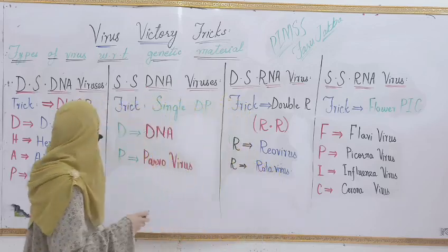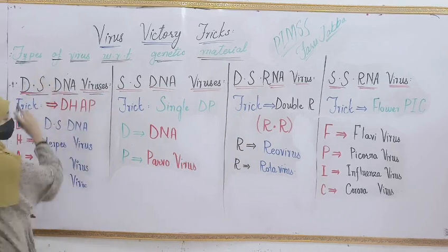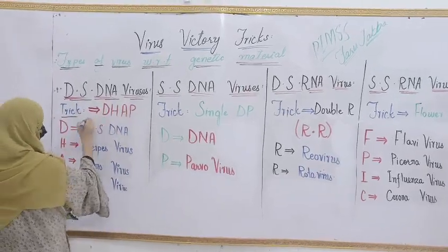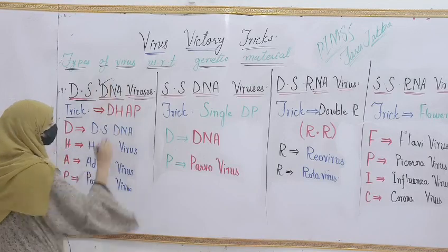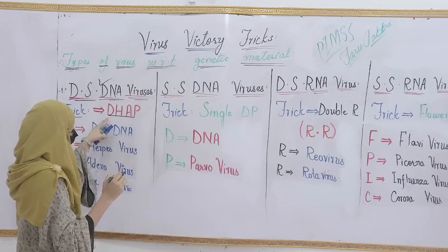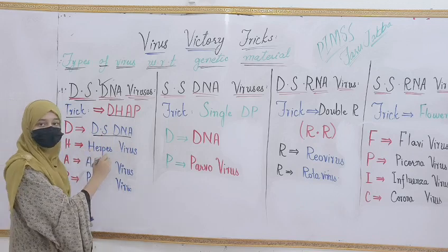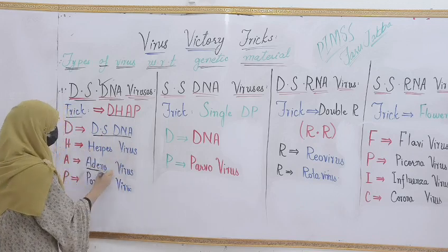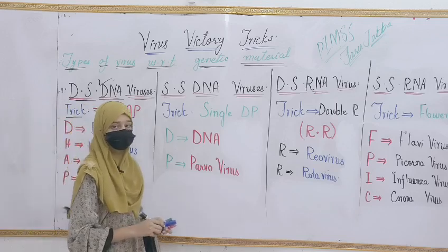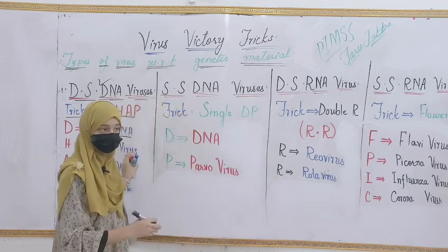So let's start. The first one is DS DNA virus. DS stands for double-stranded. The trick to memorize the types of DS DNA viruses is DHAP — D-H-A-P. D stands for DS DNA (double-stranded DNA), H stands for herpes virus, A stands for adenovirus, and P stands for pox virus. That was an easy trick to understand the DS DNA viruses and its examples.